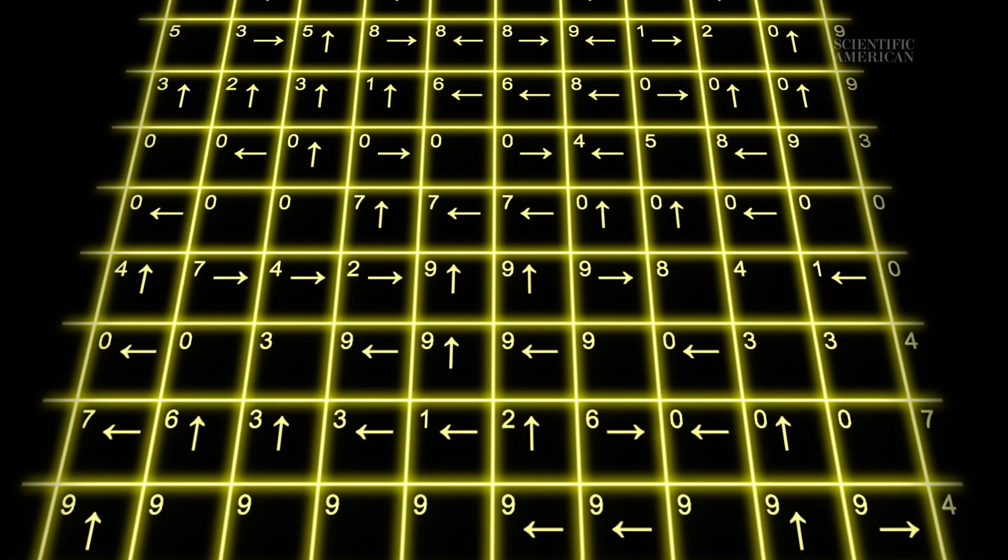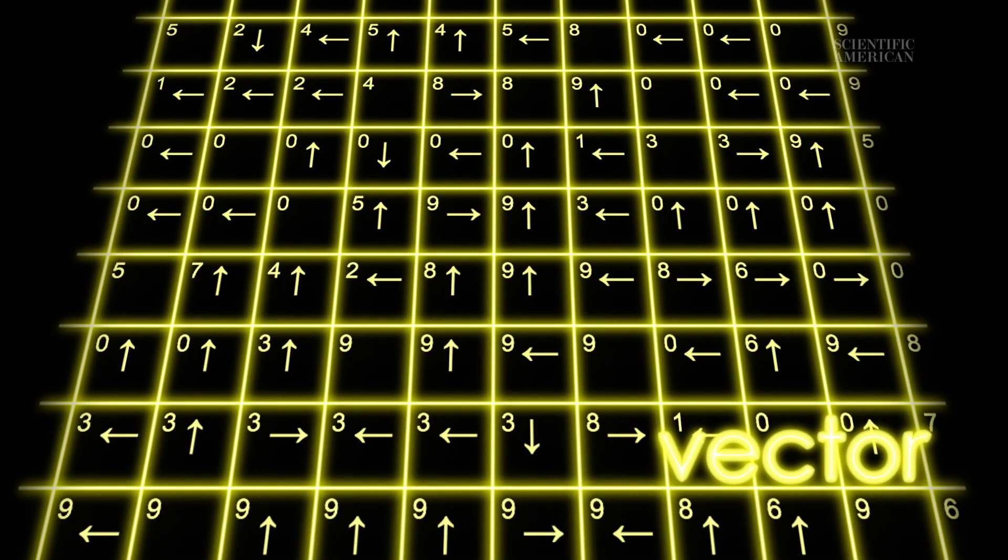The electric and magnetic fields are called vector fields. They have both a number and a direction at every point in space, sort of like a map of wind velocity.